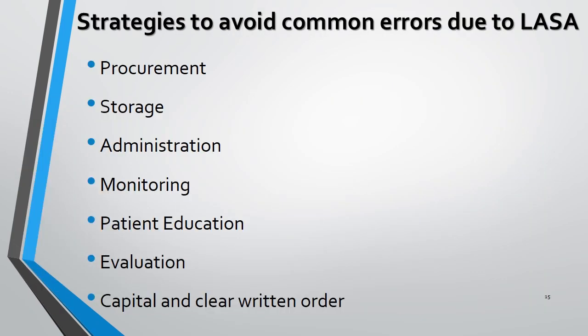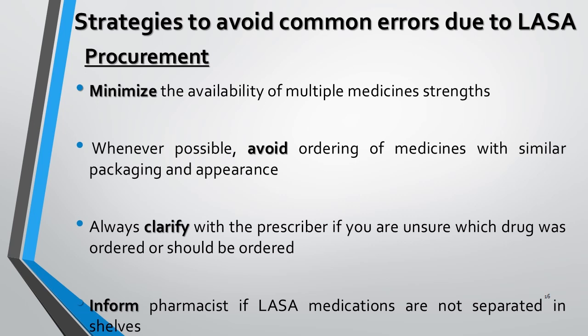The previously mentioned errors need to be addressed through various strategies. For procurement, minimizing the availability of multiple strengths is an important strategy. If limited-strength medications are available, there will be less confusion while dispensing. In therapy, the desired high dose can be achieved by adding two smaller doses. Ordering of similarly packaged or appearing medicines should also be avoided.